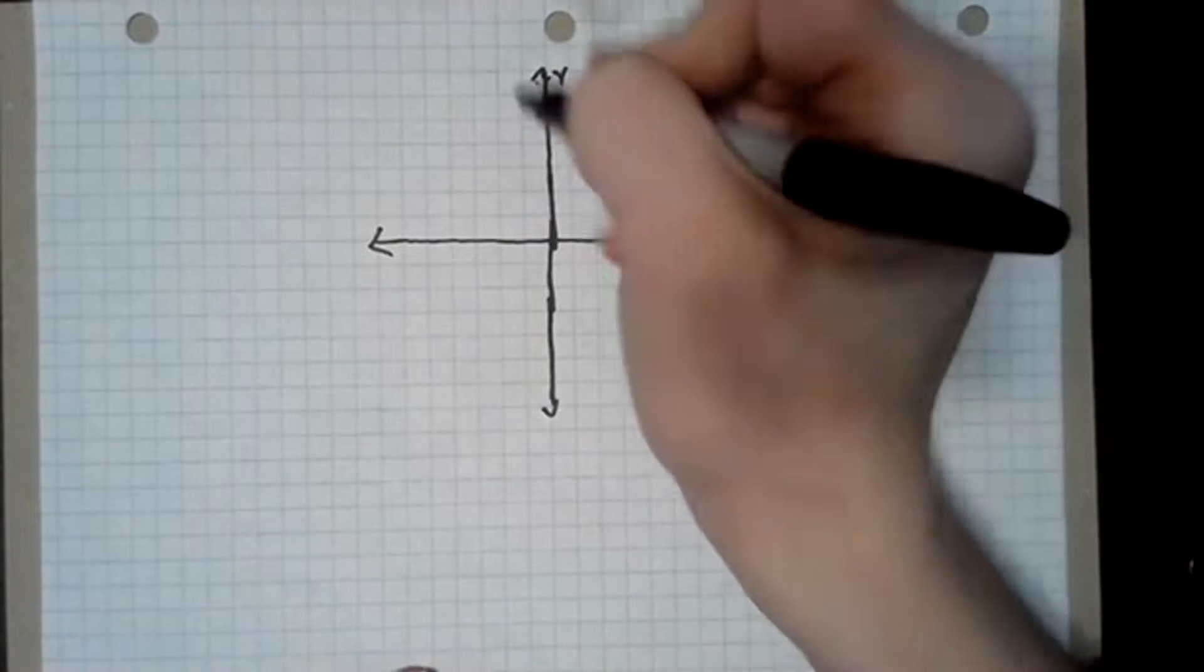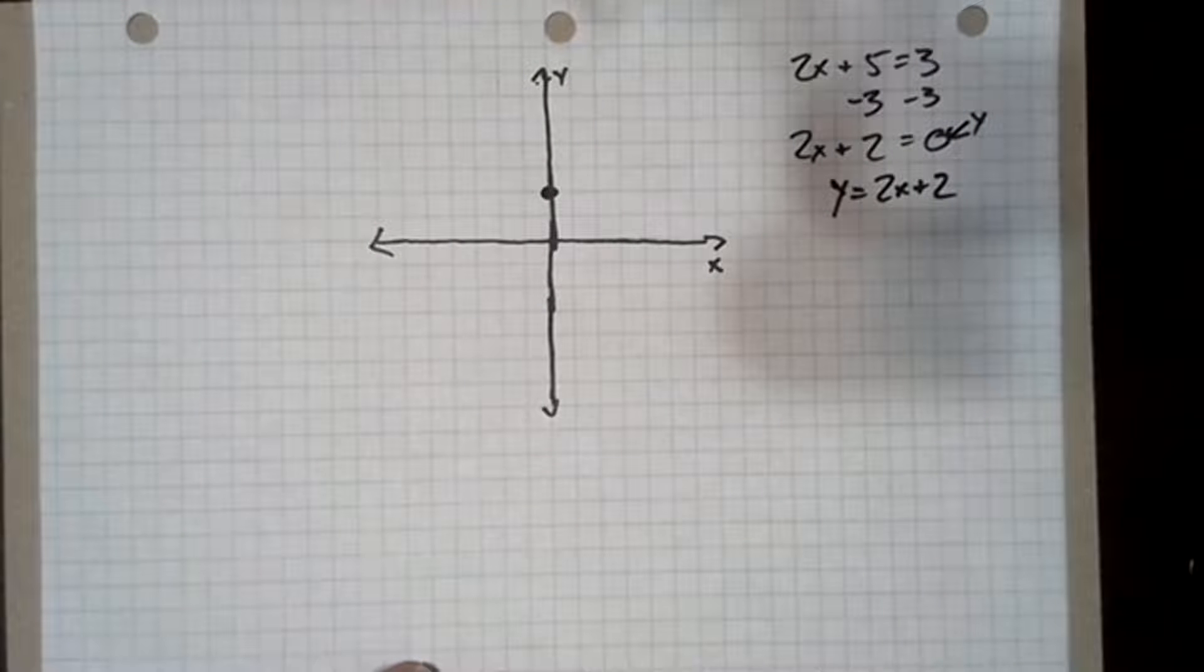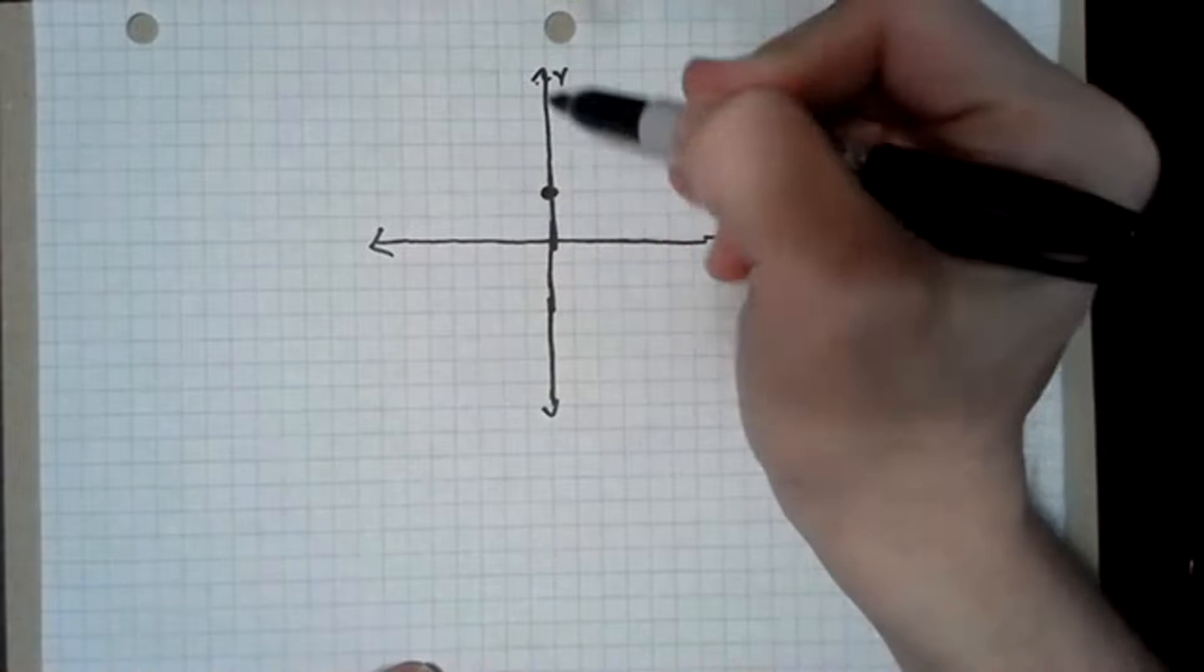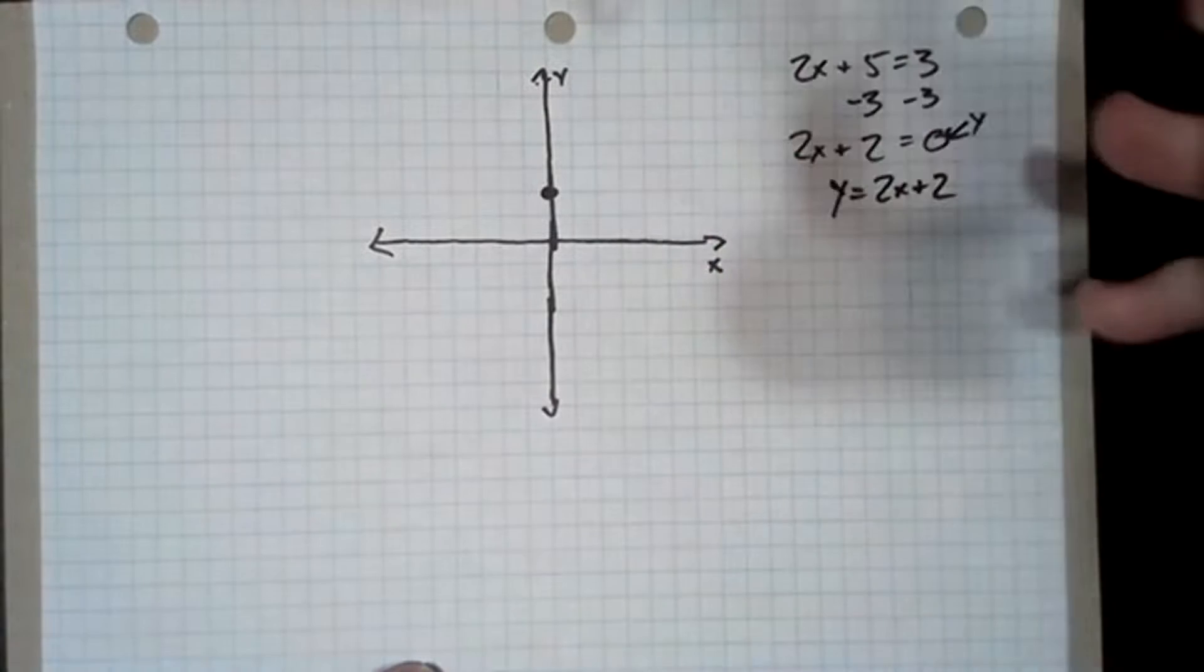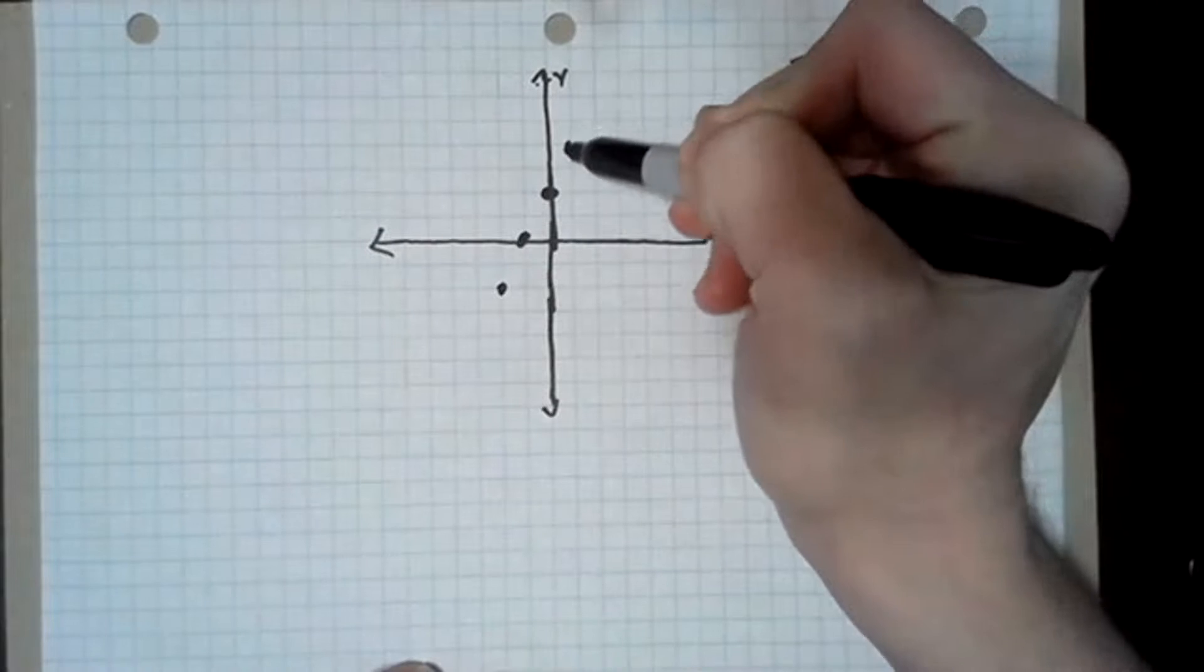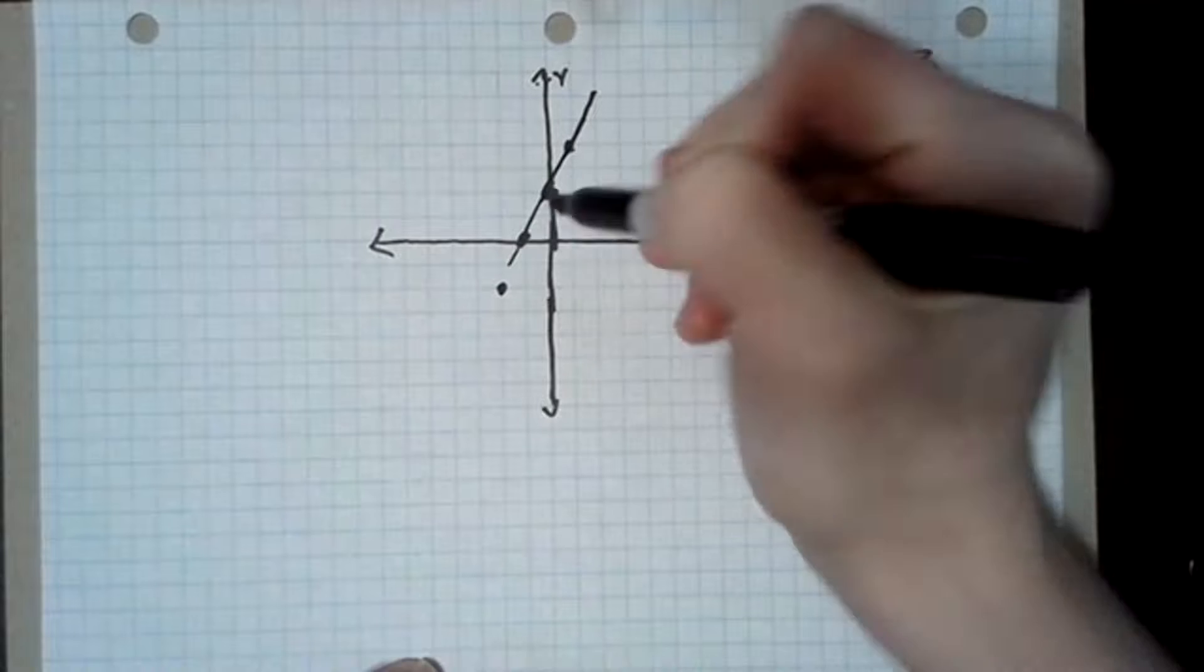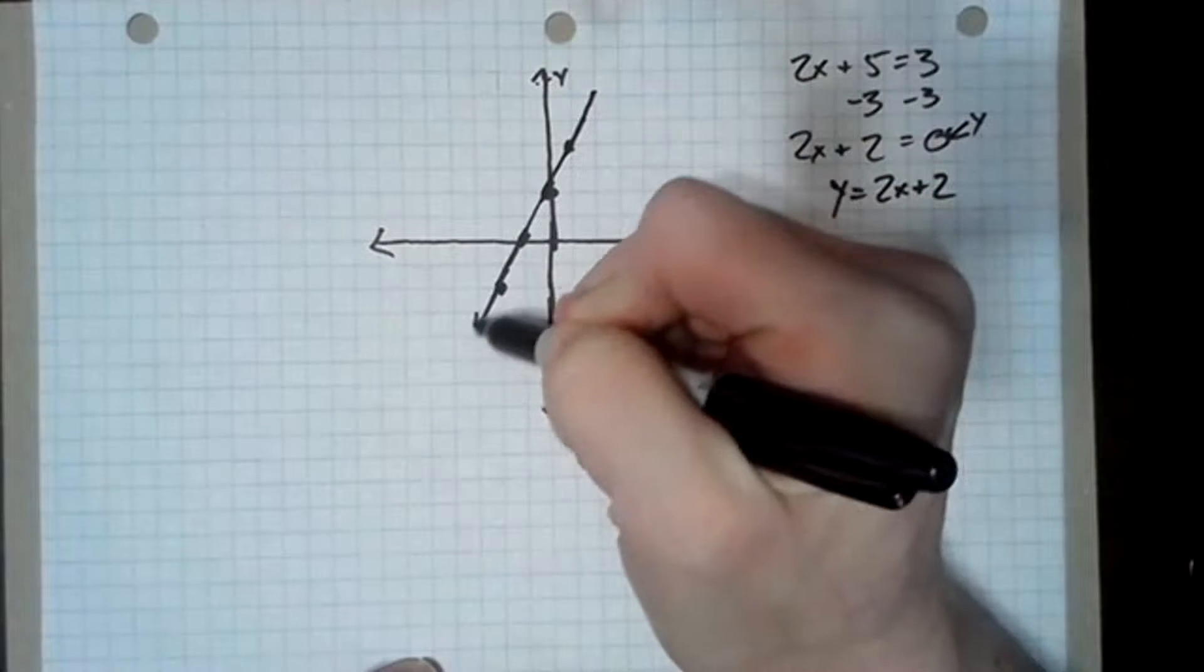Okay, well, we know that's got a y-intercept of 0, 2, and then we can easily find a few more points that are on that line, and so the line looks something like this.